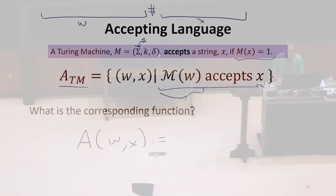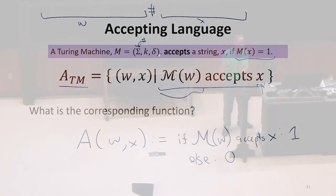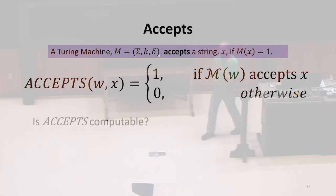Our accepts machine is going to take those two strings as input, and if it's going to output one if M(w) accepts x, else it's going to output zero. I think it's more natural to think of things as functions than languages, but they're really the same thing. So, is this function computable?